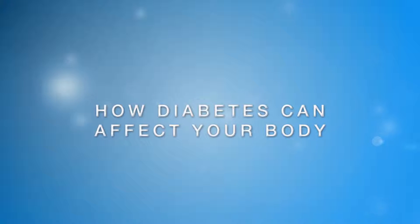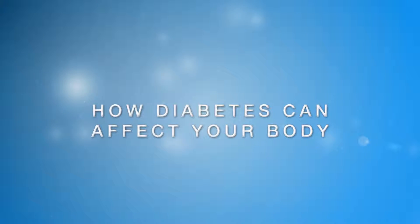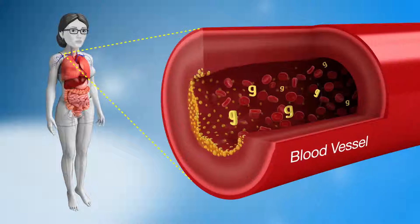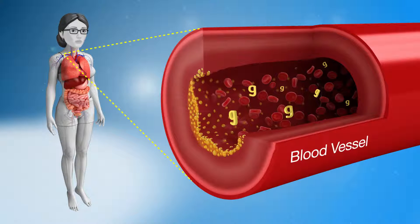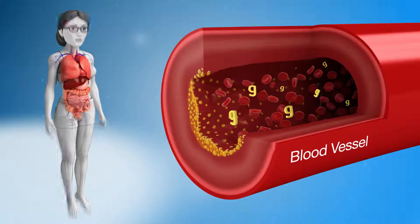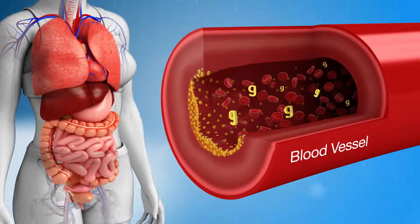Diabetes occurs when there is too much glucose in the blood. If diabetes is not managed, high blood glucose levels and other risk factors can lead to blood vessel and nerve damage. This can lead to the development of diabetes-related complications affecting nearly every organ in the body.